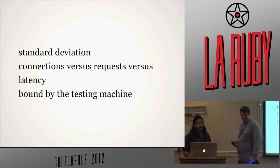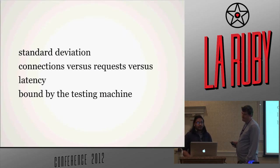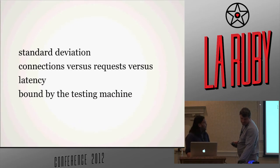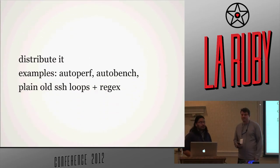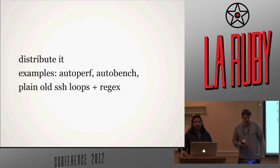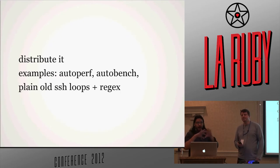Perhaps one of the bigger problems is I'm bound by the tester — it's just as likely my tester will fall before my server falls. So of course, let's distribute it. AutoPerf is a wonderful tool from Igvita, where we branch this out to many machines so we can have many testers going against the server.